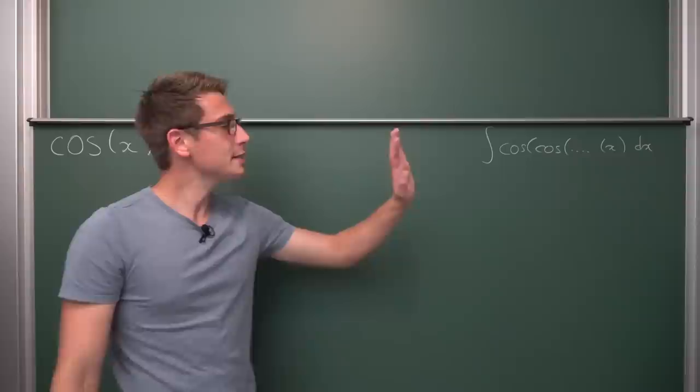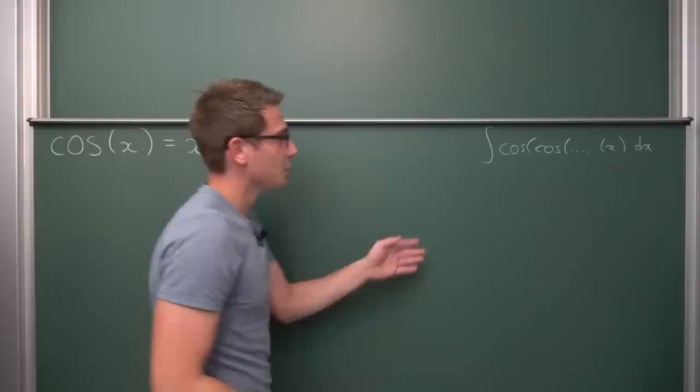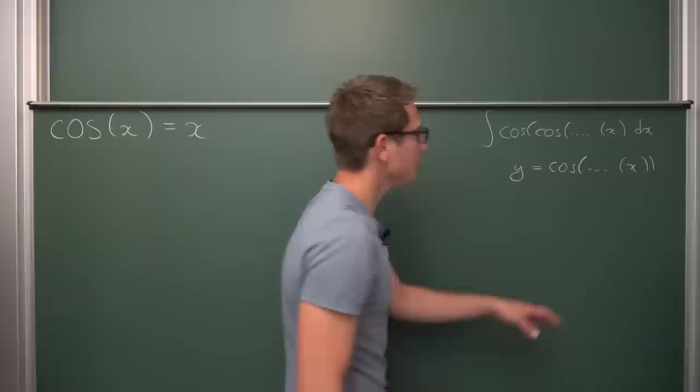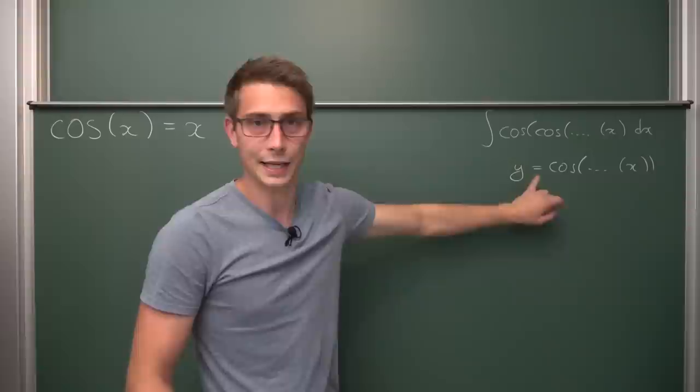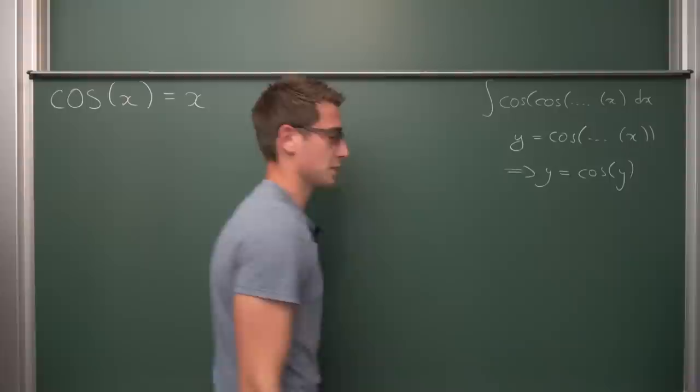What we did is we said: if we take a look at this integrand and do a little substitution — if y equals the cosine of the cosine blah blah blah of x — then since we have infinitely many nested cosines, the inside is just y again. So we can substitute and get that y equals the cosine of y.